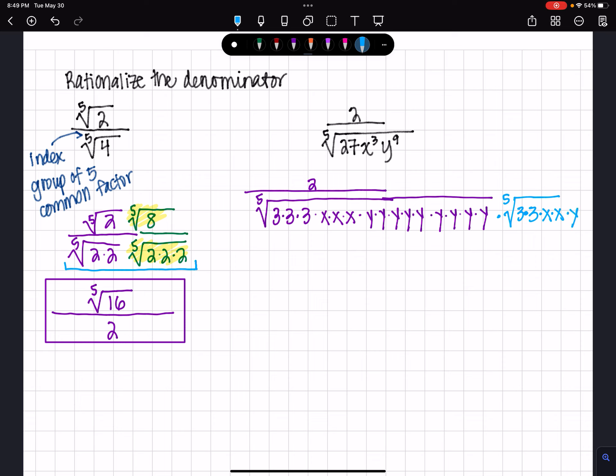And it's going to need 1 more y. And the reason it only needs 1 more y is because I've got a group of 5, and then I've got 4. This 5th one will give me a group of 5 y's.